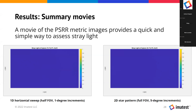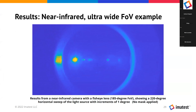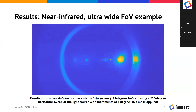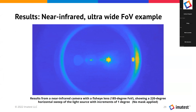Here's an example of a result from a near-infrared camera with an ultra-wide field of view lens. 这里我们看到是用一个超广角的镜头，配合一个近红外的影像。This data shows a 220-degree horizontal sweep of the light source with increments of one degree.